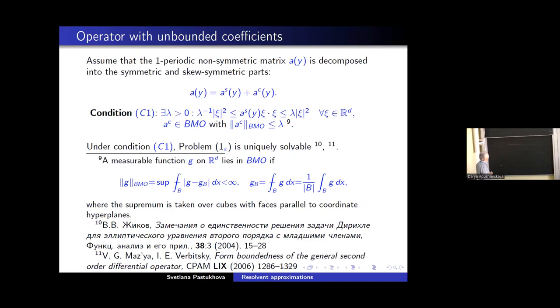Now we pass to the case with unbounded coefficients. Now we can see the non-symmetric matrix. Decompose it into symmetric and skew symmetric parts. As A and B. The first condition C1 will be uniform ellipticity for the symmetric part. And skew symmetric part will have entries from the space BMO with BMO seminorm less than the same constant λ, ellipticity condition for symmetric part.